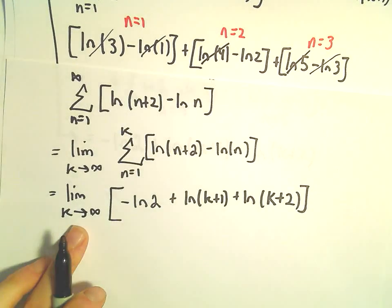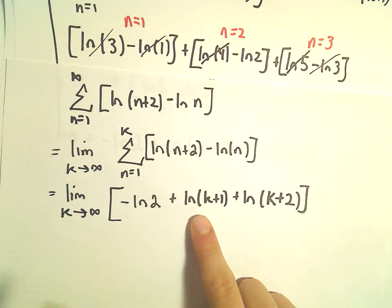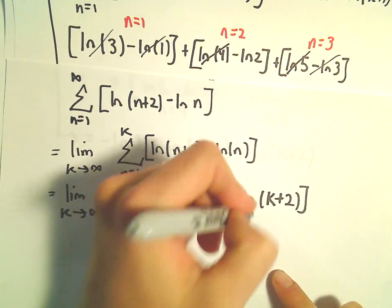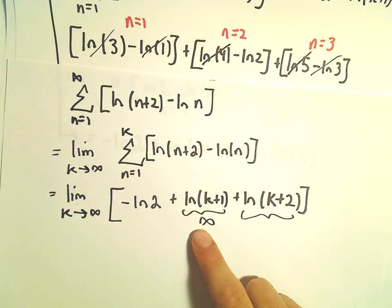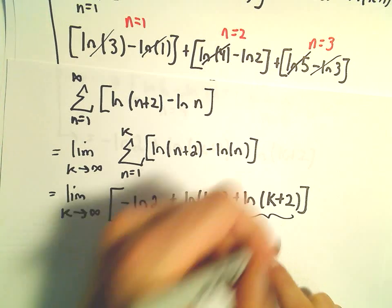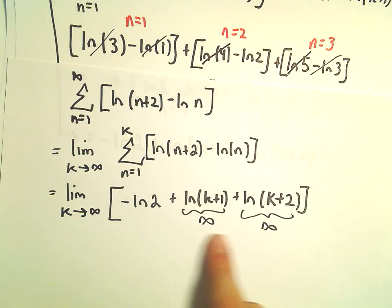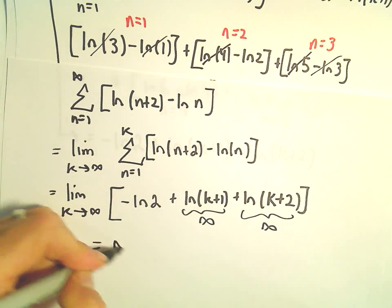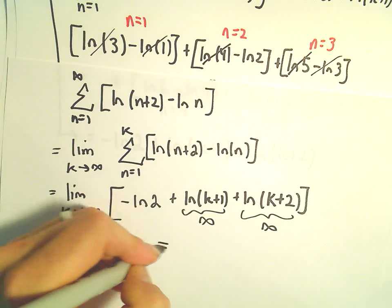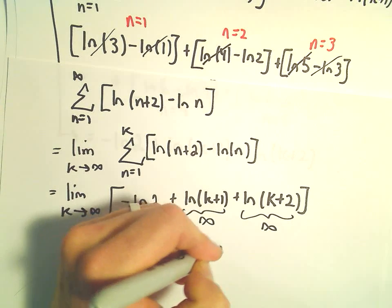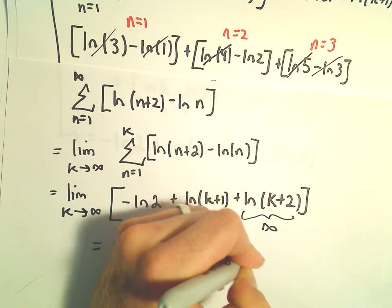But in this case, as k goes off to infinity, this term is going to go to infinity. The second term is infinity. The third term is also going to go off to infinity. So we have negative ln of 2 plus a couple infinities. Well, this is going to go off to infinity, and in this case, we would just simply say that this is an example of a divergent series.